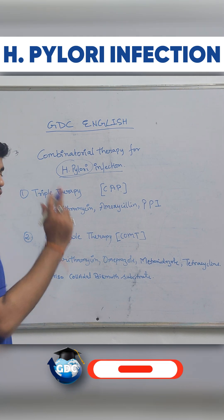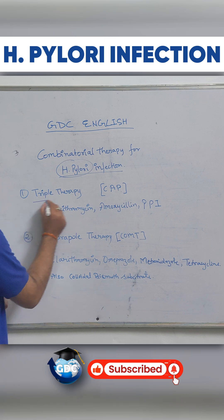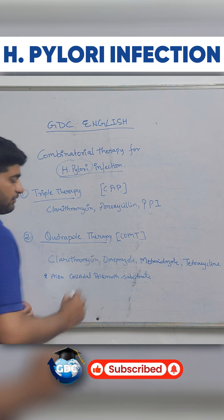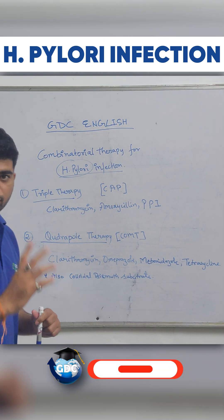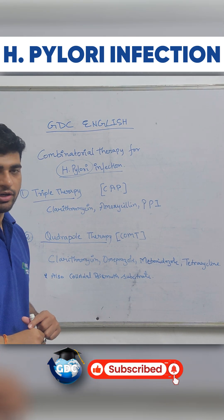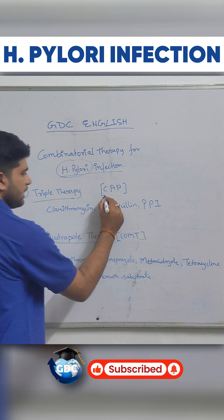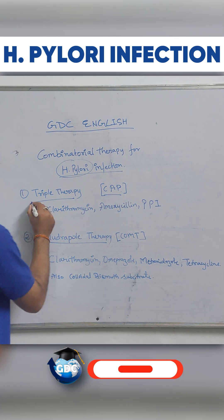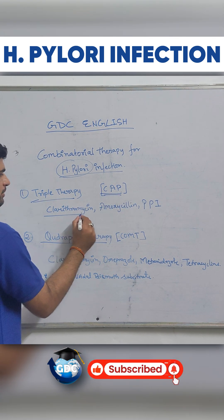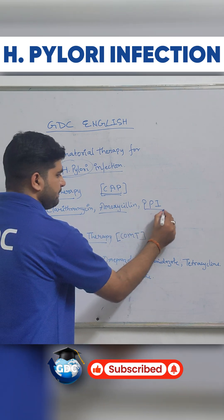We have two kinds of therapy: triple therapy and quadruple therapy, which can be learned through a trick — this is very important for you guys. Triple therapy can be remembered through the mnemonic CAP: Clarithromycin, Amoxicillin, and a PPI.